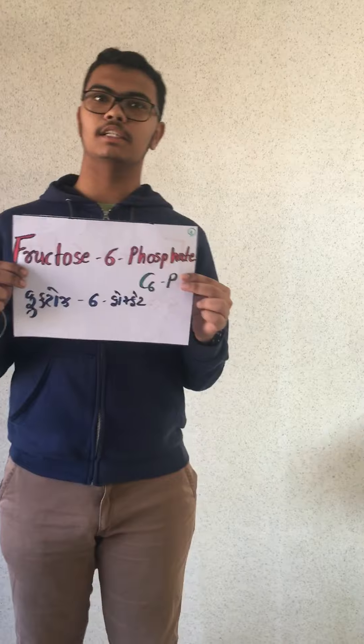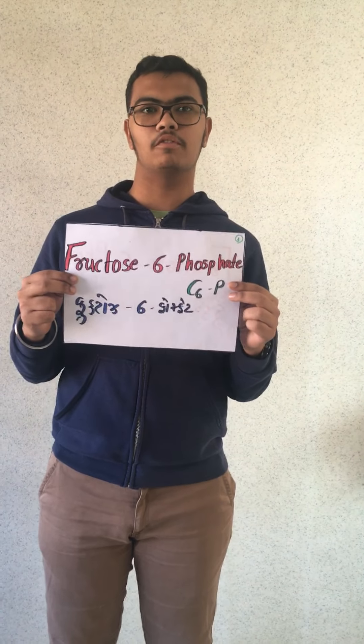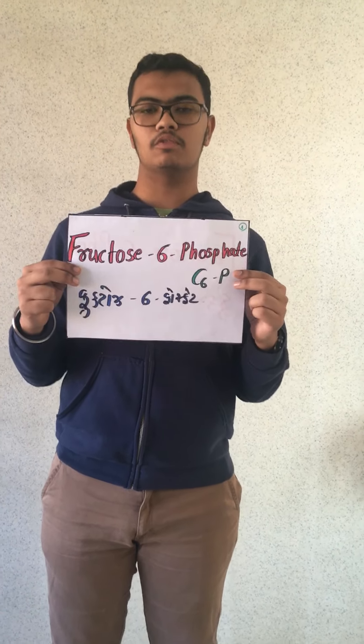I am fructose-6-phosphate. I have 6 carbons and 1 phosphate. I am an isomer of glucose-6-phosphate.